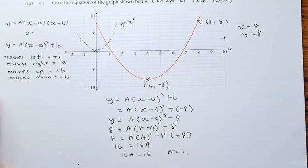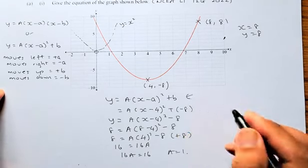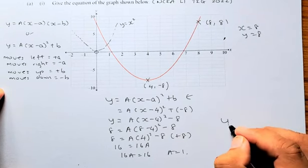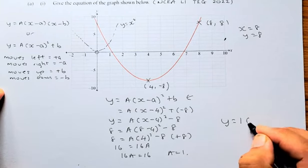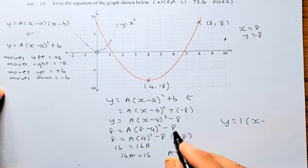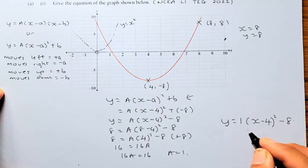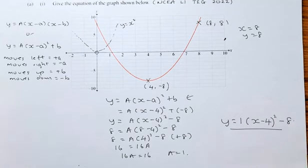Once we found that A, we are going to substitute back into this equation. The equation of the parabola is going to be y equals A which is 1, x minus 4 squared minus 8. Hopefully, you will be able to learn how to find the equation of a parabola and I will see you soon. Cheers!